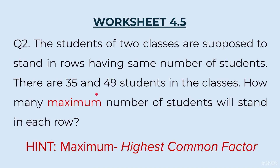Another way to understand this: a factor of a number is either equal to that number or less than it, while a multiple is equal to or greater than it. So we use factors when we want a smaller number, and multiples when we want a bigger number. Here, each row will have fewer students than 35 or 49 — so we need a smaller number, meaning we find factors: specifically the HCF.